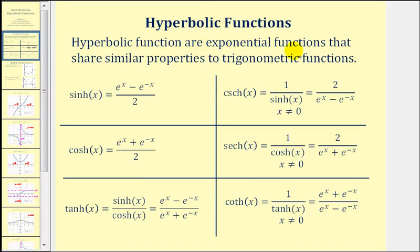Hyperbolic functions are exponential functions, but they share similar properties to trigonometric functions. Notice how there are six hyperbolic functions, and there are also six trig functions. Each hyperbolic function is defined using exponential functions. So if we wanted to evaluate a hyperbolic function, we would just substitute the given value of x into the exponential function, and then simplify.